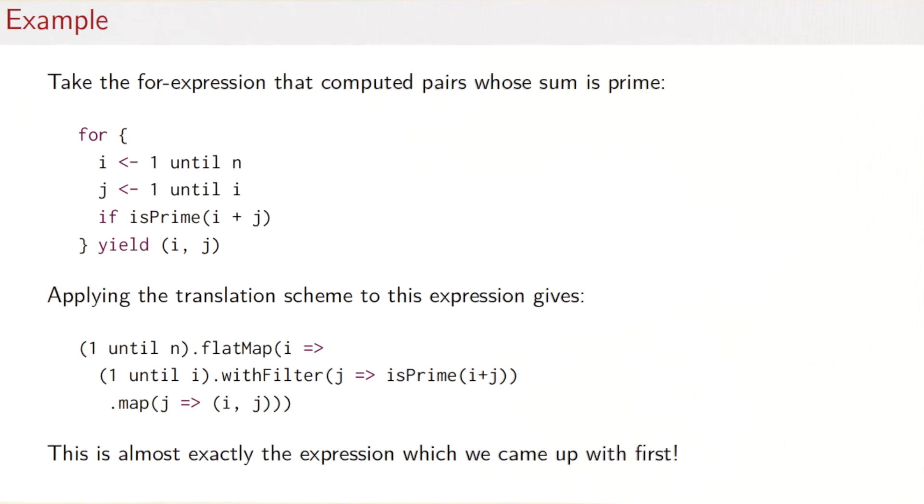If we apply our translation scheme mechanically, we would be left with this for expression here. So the first one here we have i until n, that's what you see here. It's a generator followed by a generator, so I have a flatMap.